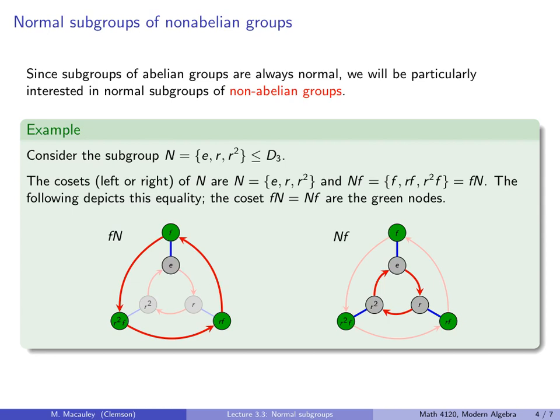So here's a picture of this equality. So let's do what we did before. Start at the identity, and the left coset is what you get when you do F, and then you follow the N arrows, which are all the red arrows, we get to the green nodes. On the other hand, if we first start at the identity and follow the N arrows, i.e. the red arrows, and then from each of those we move out and follow the F path, N and then F, then we get to those same nodes.